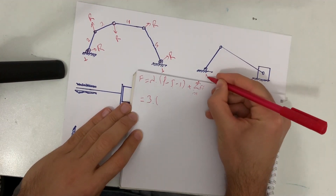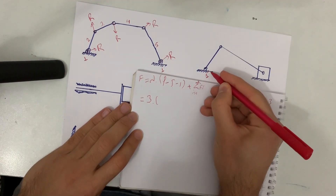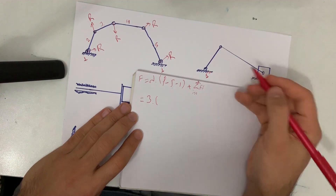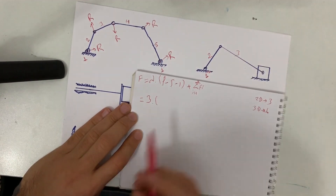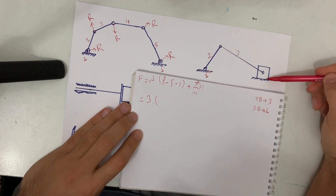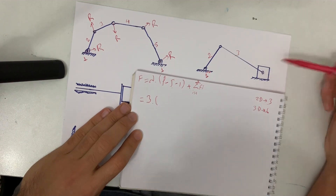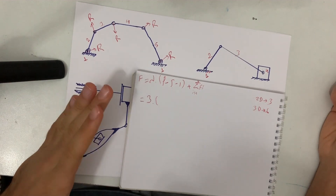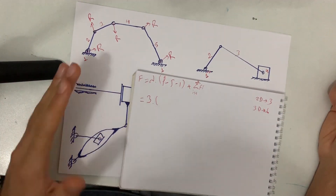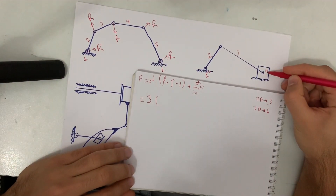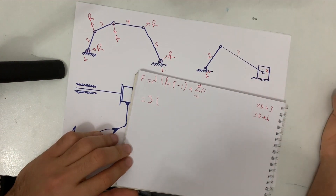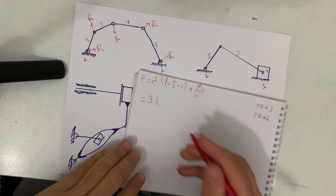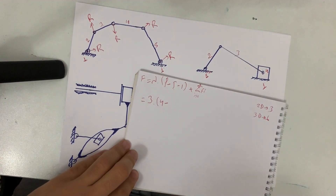As always, start with the ground — write 1 for the ground. Then we have a second link and a third link. There is also a rigid body (the slider) that can slide on the ground — that is also a link. So we write link 4. The other ground connection is the same ground, so L = 4 links total.